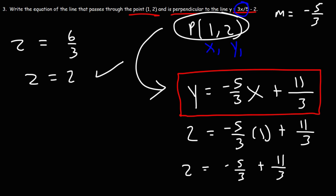So that's it for this video. Now you know how to write the equation of a line that passes through a point and is either parallel or perpendicular to some other line. You also know how to check your work to see if you have the right answer.